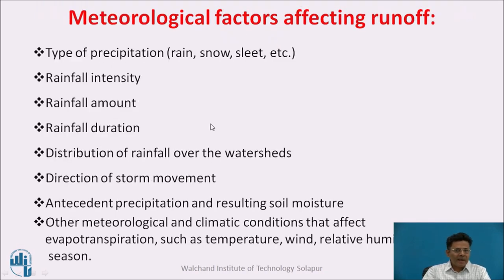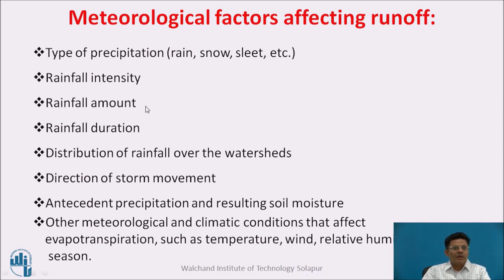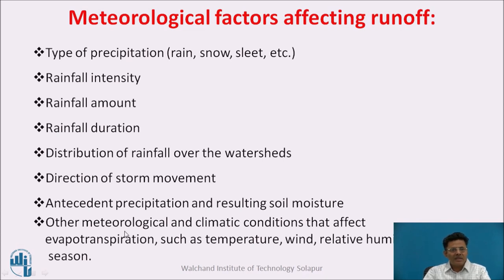There are also meteorological factors which affect the runoff process. These include: the type of precipitation — whether rain, snow, or sleet — the intensity of rainfall (high intensity gives high peaks), rainfall amount or depth, rainfall duration, distribution of rainfall over the watershed, direction of storm movement, antecedent precipitation and resulting soil moisture, and other climate conditions affecting evapotranspiration such as temperature, wind, and relative humidity.